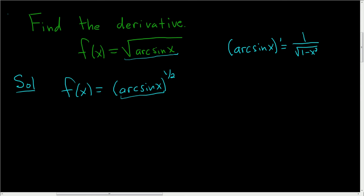So here we'll also have to use the chain rule. So we have f prime of x. You bring the 1 half down, so 1 half, and leave the inside alone. This is the inside function.